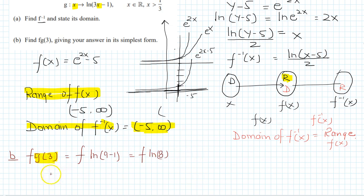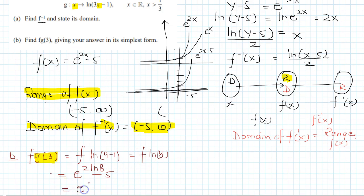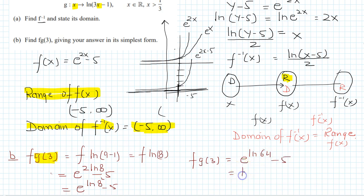Now f(x) = e^(2x - 5), so f(ln 8) = e^(2·ln8 - 5) = e^(ln 8² - 5) = e^(ln 64 - 5) = e^(ln 64) / e^5... which simplifies to 64 · e^(-5)... actually e^(ln 64) = 64, so fg(3) = 64 - 5 = 59.